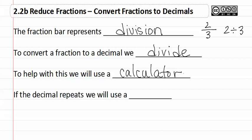If the decimal repeats, we will use a bar. If I get an answer such as 1.33333 and this continues on, I will then show this using a bar as 1.3 with a bar over the three to show that that three repeats.